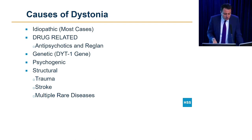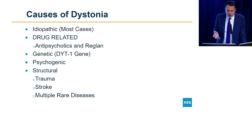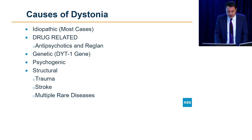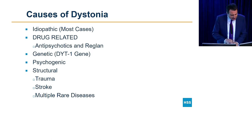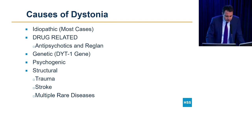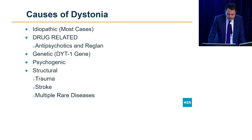Pills only help so much for DYT1, and that's when deep brain stimulation surgery was developed for those patients — with amazing results. It takes a few years, but they end up walking like completely normal people after being wheelchair-bound. For generalized dystonia, deep brain stimulation is the way to go.